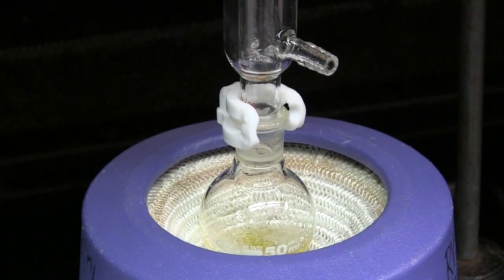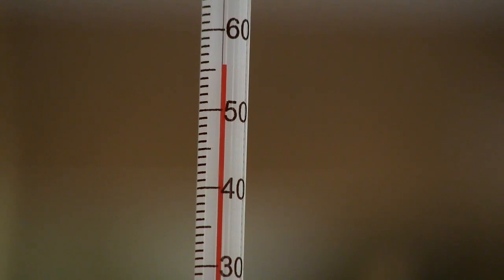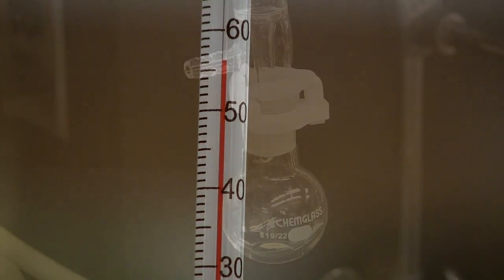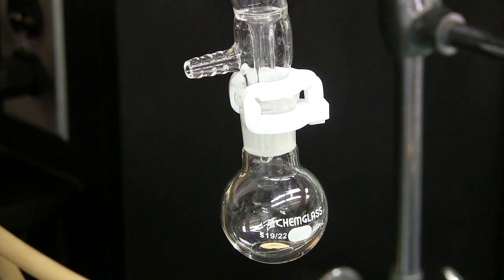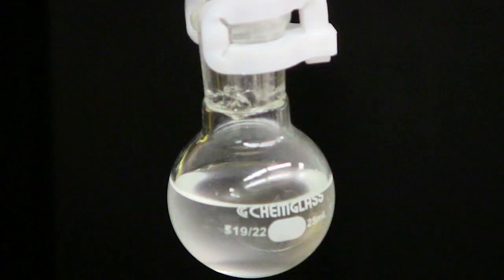Adjust the heat so that the product is distilling over but the temperature at the stillhead does not exceed 120 degrees Celsius. Stop collecting product once the drip rate drops noticeably or when the stillhead temperature cannot be kept below 120 degrees Celsius. This will likely occur when you have collected 10-15 ml of liquid.